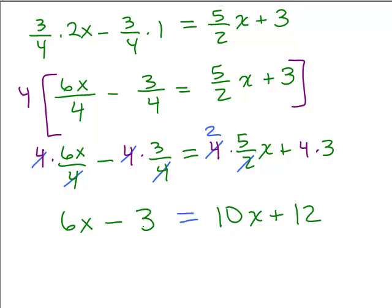All right, so we have 6x minus 3 equals 10x plus 12. And now we need to solve this by getting the variables on one side and constants on the other. So we did the distributive property first, we multiply by the least common denominator, and then we get a nice equation without any fractions or parentheses.